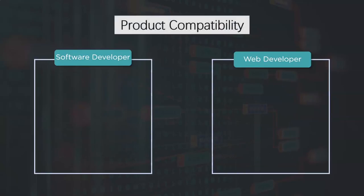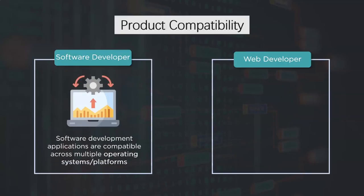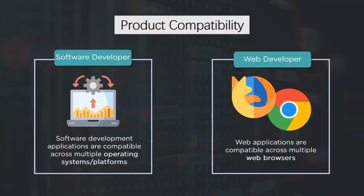The third point of comparison is product compatibility. Software development applications are compatible across multiple operating systems or platforms. Web applications, on the other hand, are designed to be compatible across multiple web browsers.